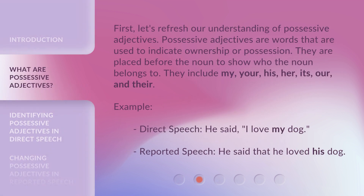First, let's refresh our understanding of possessive adjectives. Possessive adjectives are words that are used to indicate ownership or possession. They are placed before the noun to show who the noun belongs to. They include: my, your, his, her, its, our, and their.